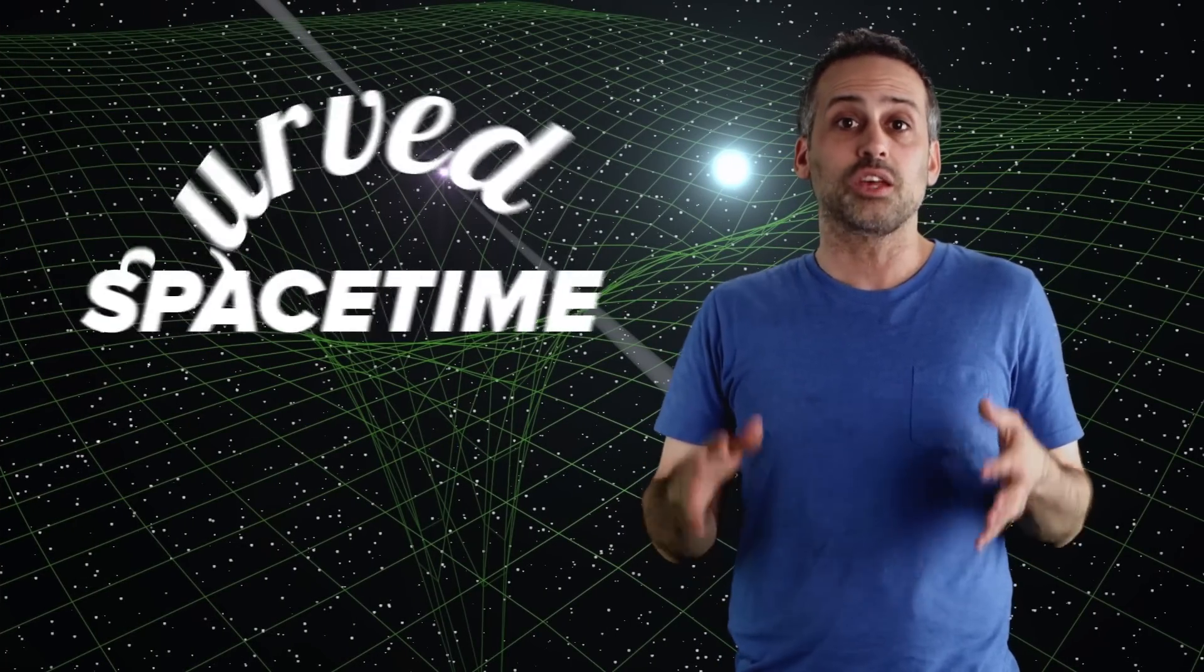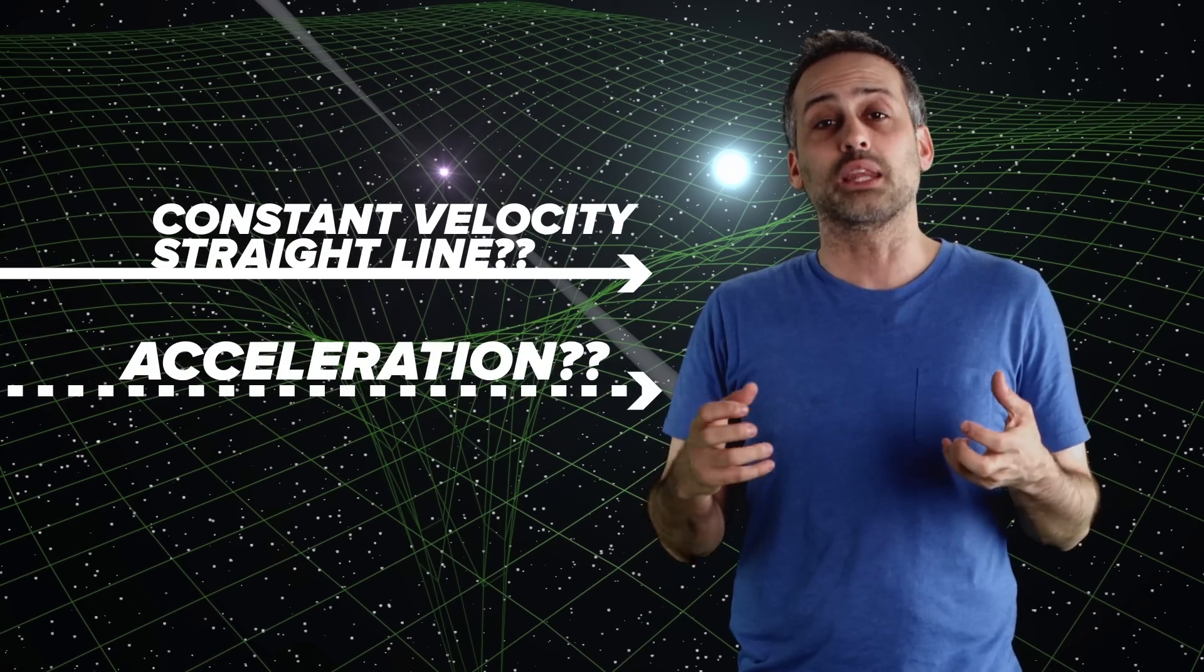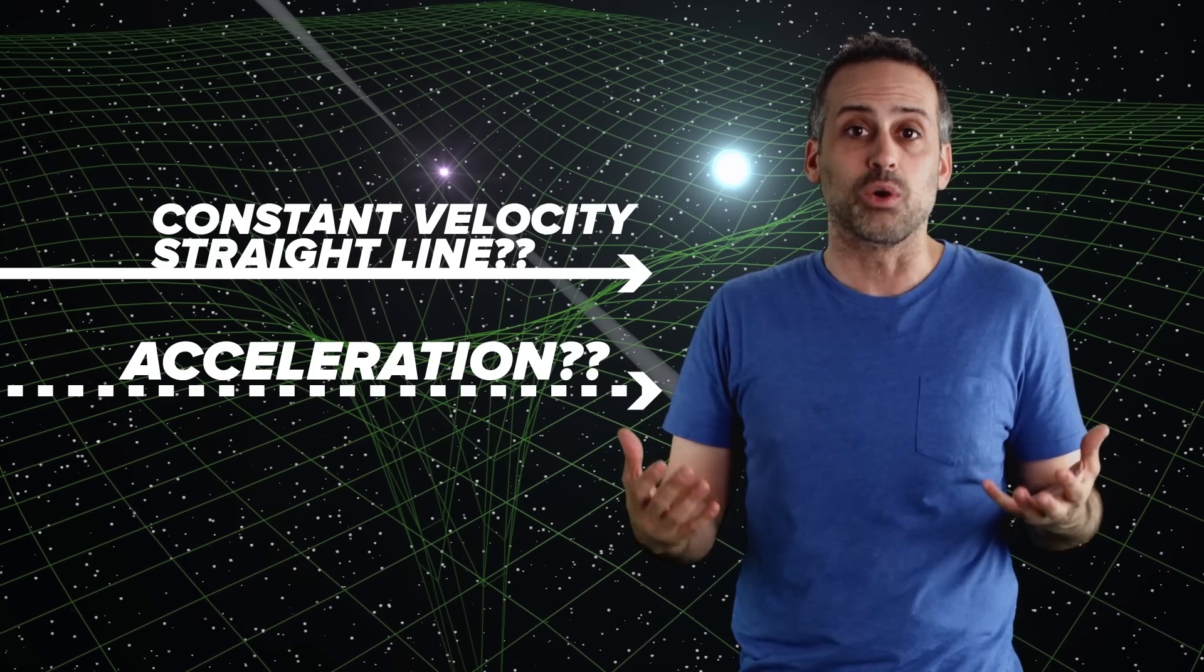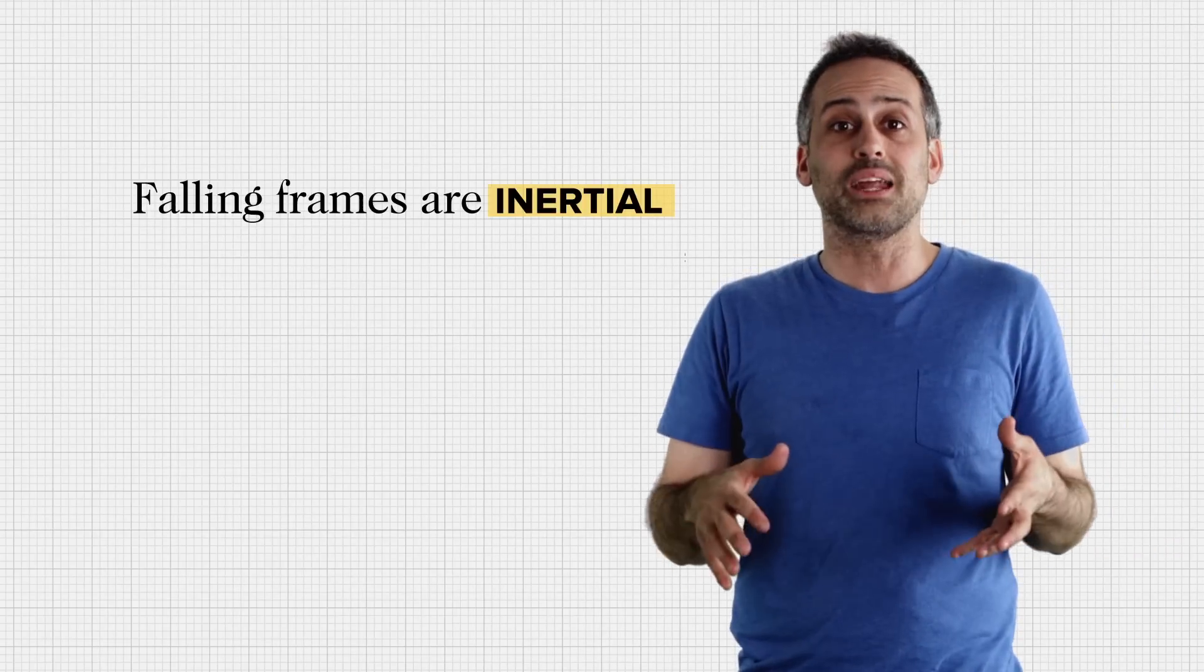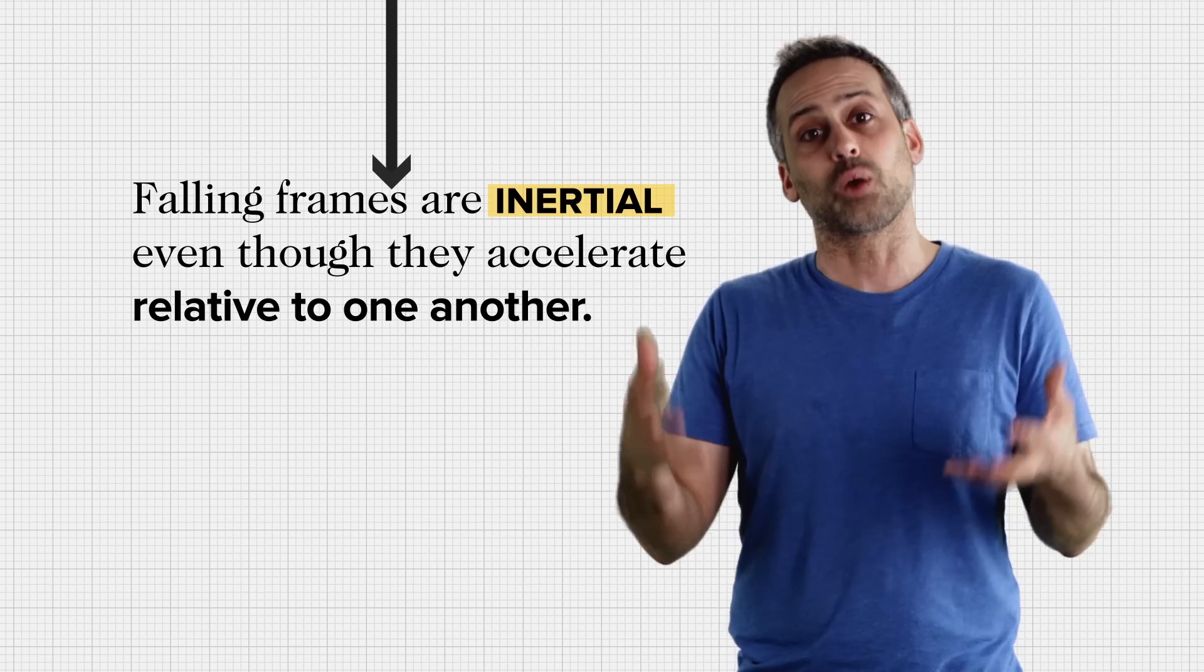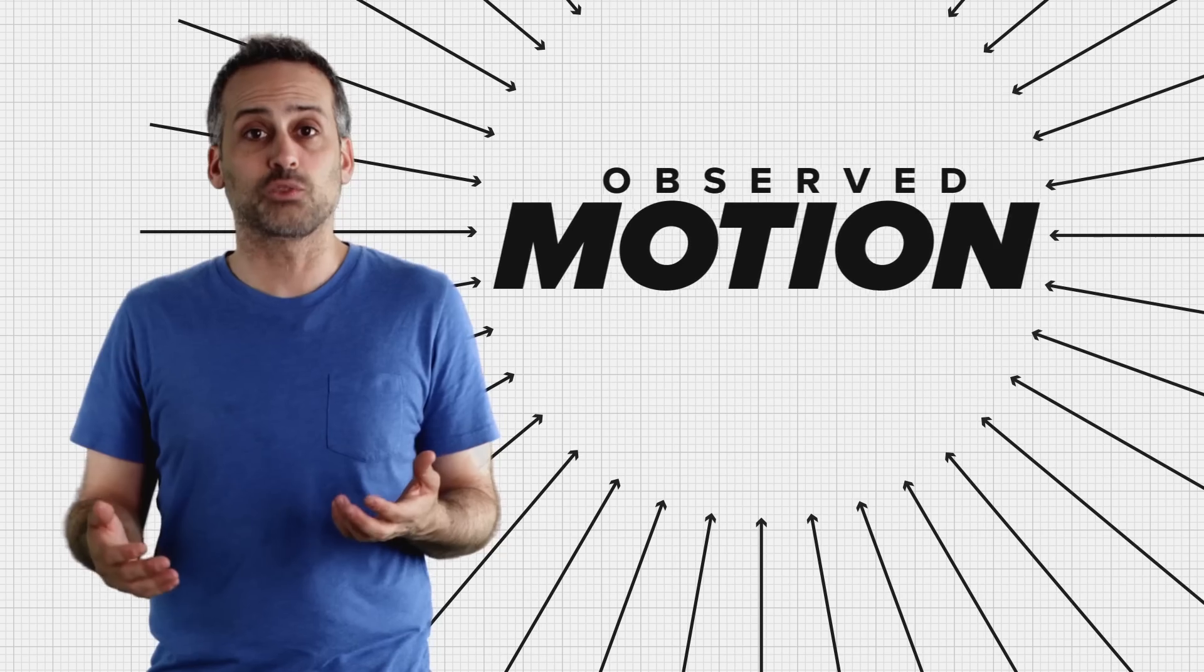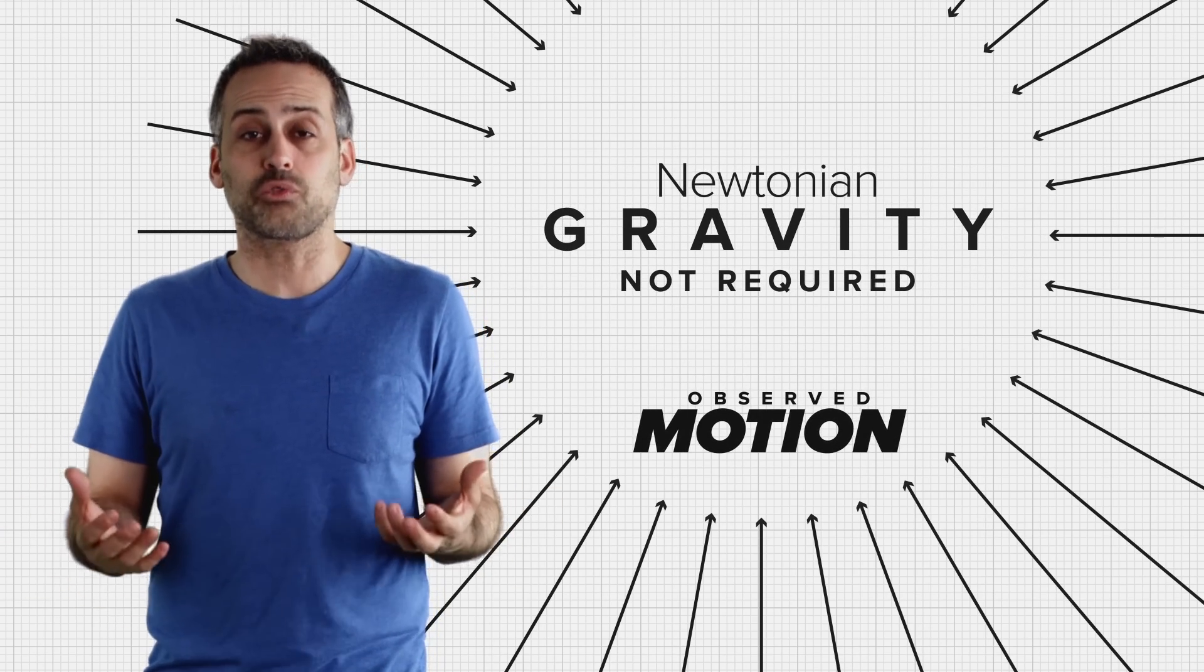Now, ultimately, the way around those objections is to realize that if the world is a curved spacetime, then the familiar meanings of terms like constant velocity, straight line, and acceleration will become ambiguous. We'll be forced to redefine them. And once we do, there's no longer going to be an inconsistency with saying that falling frames are inertial, even though they accelerate relative to one another.